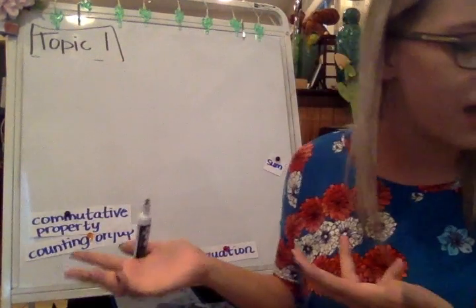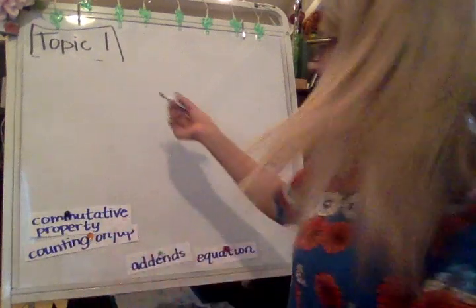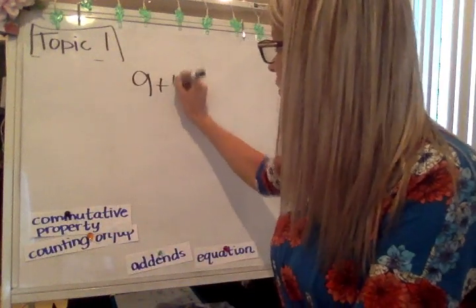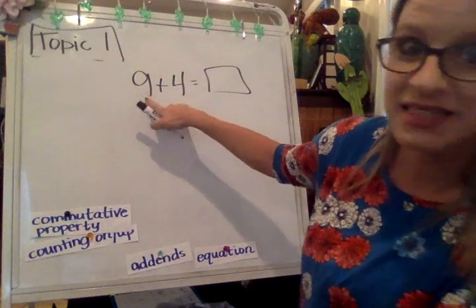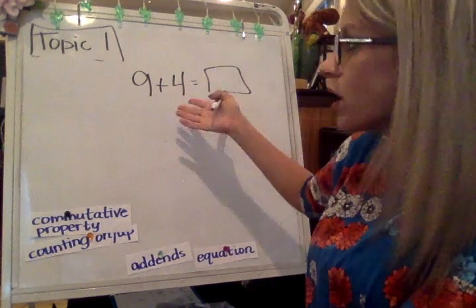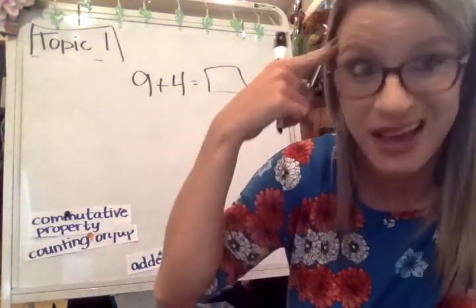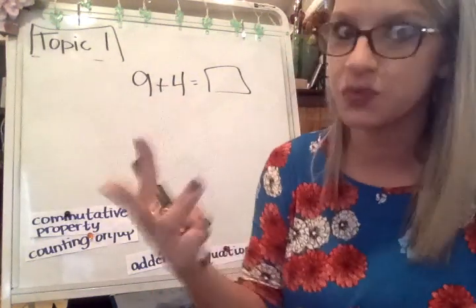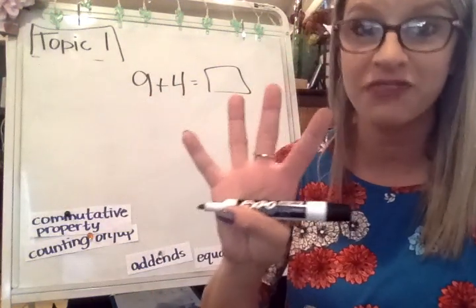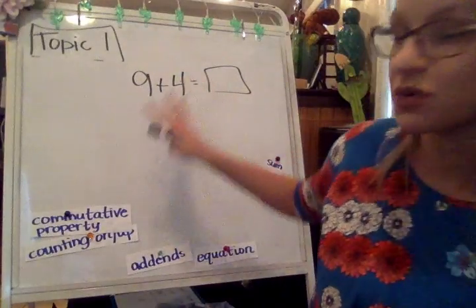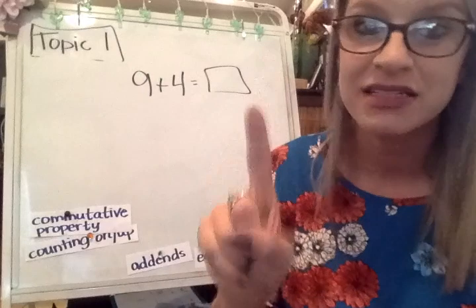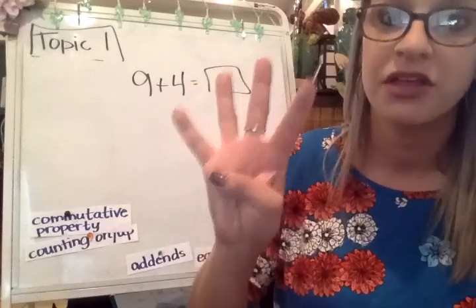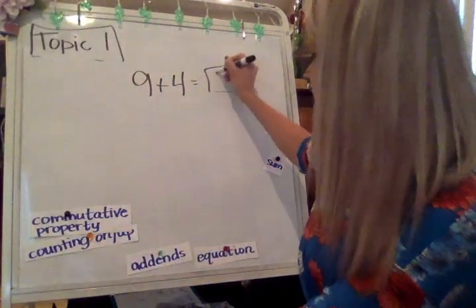So some more examples with the count on. 9 plus 4. So what is the sum of the addends 9 plus 4? I would want to put the larger number in my head. So 9, 10, 11, 12, 13. I have 4 fingers that are up, which is what I'm supposed to. The sum is 13.